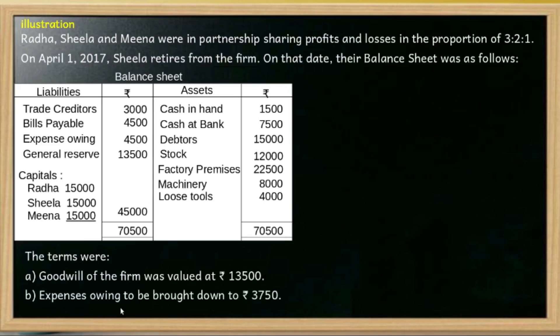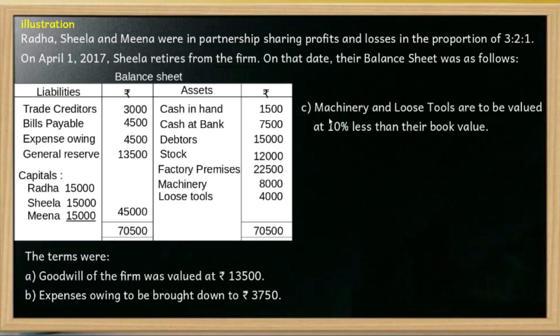The second condition is: the expense outstanding of the firm will be brought down to Rs.3,750. This is a decrease in liability.